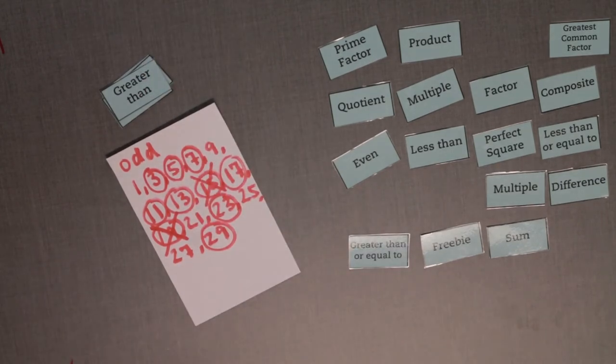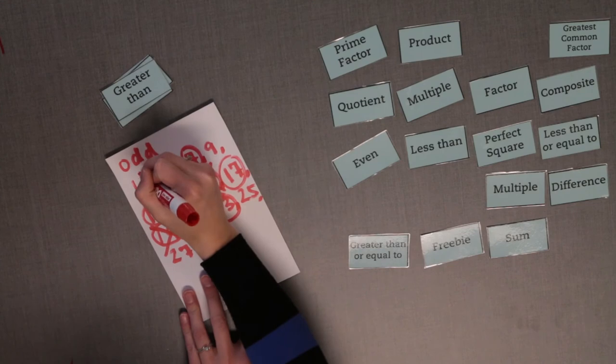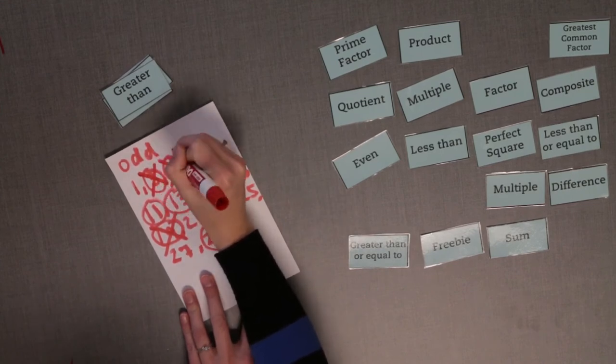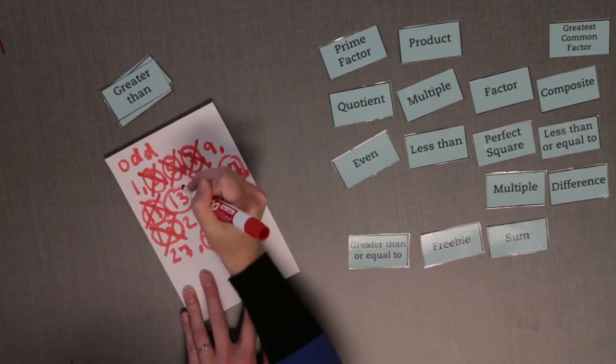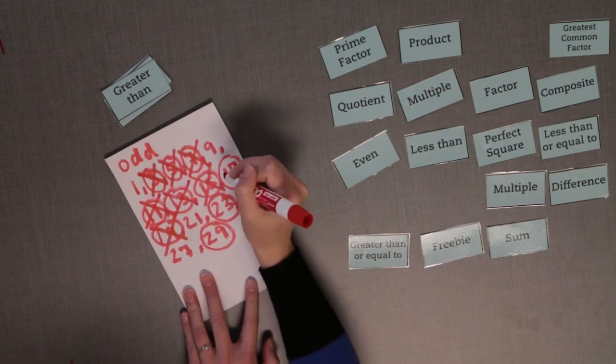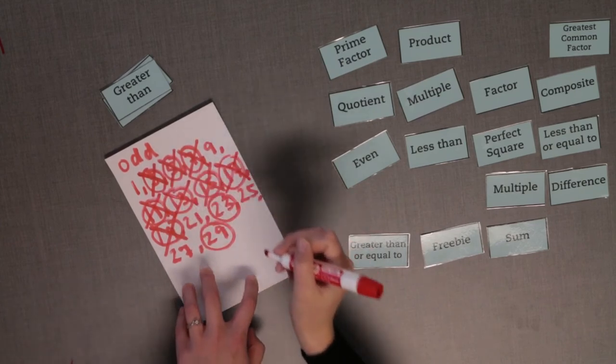We know the number is prime and less than 30. It is also greater than 19. However, the only two odd numbers that are prime in between those two numbers are 23 and 29. It has to be one of those.